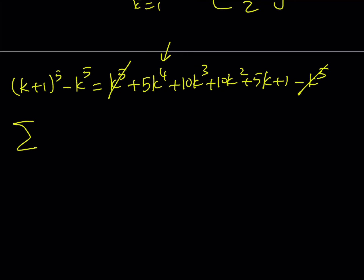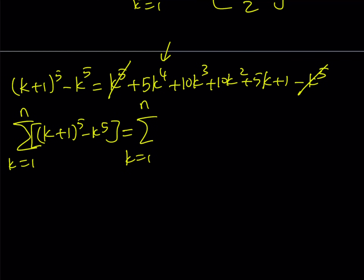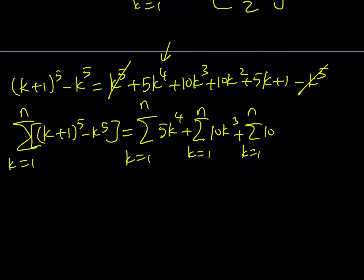Now using sigma notation, we're going to separate these into pieces. We have the sum from k=1 to n of (k+1)^5 minus k^5, and on the right-hand side we can separate the terms: 10k³, plus 10k², plus 5k, plus 1. Adding 1 n times gives n.